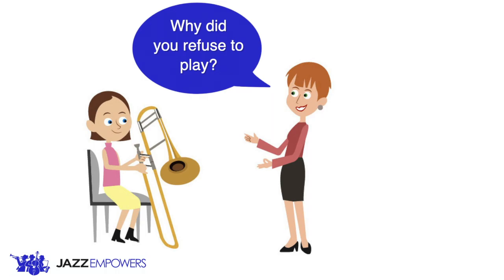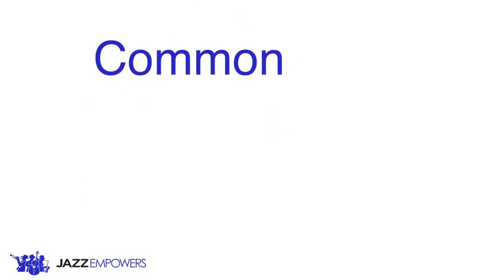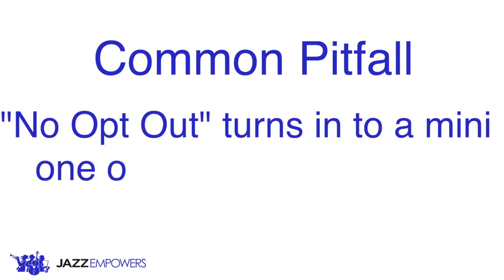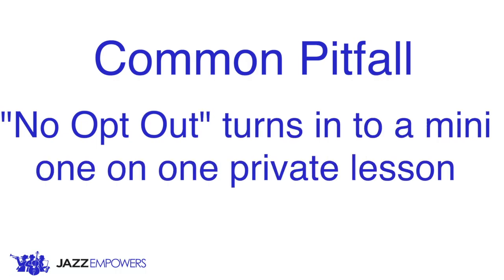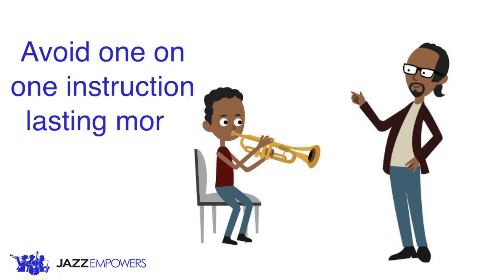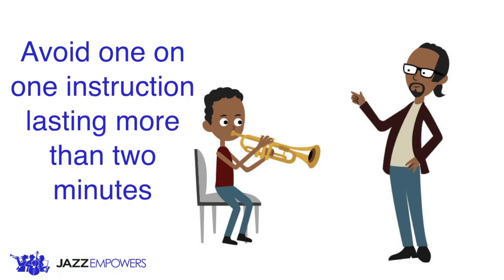This can help you understand why they refused to play, and you can use it as a learning moment so they do not opt out again in the future. Another common pitfall is if the student is really struggling and the teacher breaks it down so much that it turns into a mini one-on-one lesson. This can derail the class because the rest of the students will lose attention. To avoid this, make sure not to have one-on-one student interaction that lasts more than two minutes, and ideally try to keep it under one minute if possible.